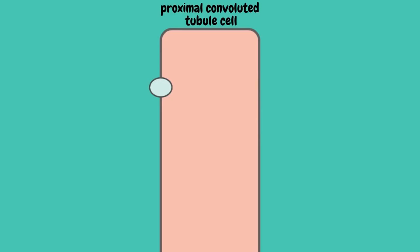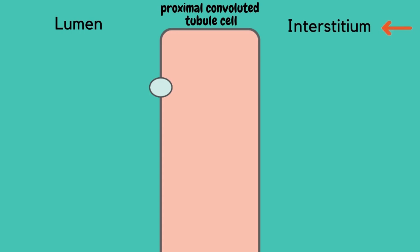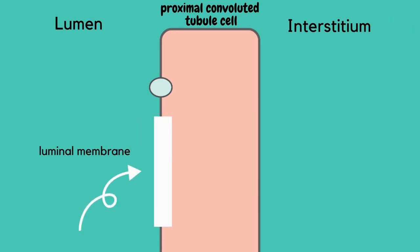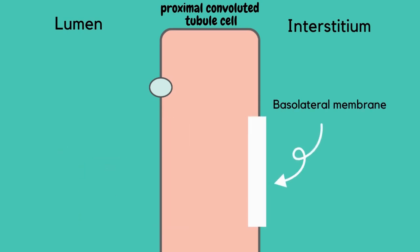Here is a proximal convoluted tubule cell. This is the luminal side and this is the interstitium side. This is the luminal membrane and this is the basolateral membrane.